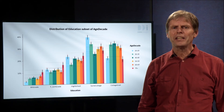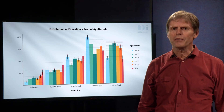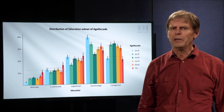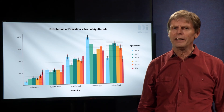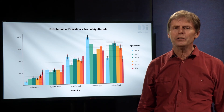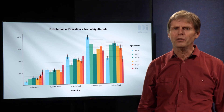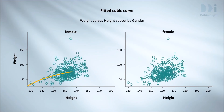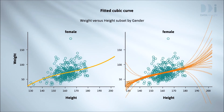That brings us to the end of our treatment of categorical variables, but we're not finished quite yet. I want to pick up a loose end from week four. Let's go back to these plots. Now that you know what a bootstrap resample is, I can explain what they are and what they're for.